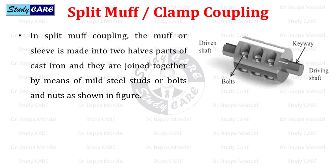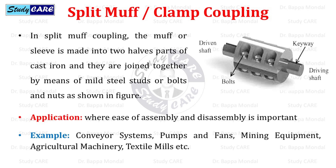Next is split muff or clamp coupling. In split muff coupling, the muff or sleeve is made into two halves of cast iron and they are joined together by means of mild steel studs or bolts and nuts, as shown in the figure. These are used where ease of assembly and disassembly is important — for example, conveyor systems, pumps and fans, mining equipment, agricultural machinery, and textile mills.